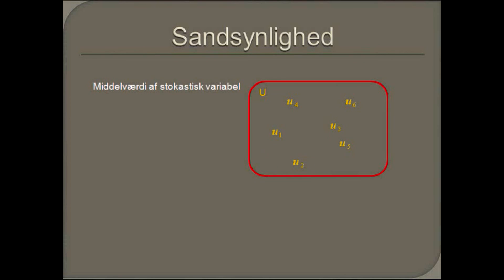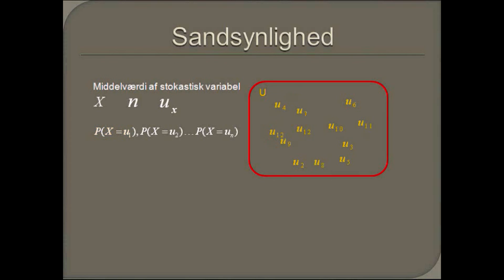Lad os nu beregne middelværdien af en stokastisk variabel X, der kan antage et antal værdier, hvor u_x er værdien af et udfald, og p er sandsynligheden for at den stokastiske variabel X er lig eksempelvis u1. Lad os antage at vi spiller med to terninger. For at beregne middelværdien — hvad vi kan forvente med størst sandsynlighed vil dukke op næste gang vi kaster de to terninger — tager vi hvert muligt udfald og ganger det med sandsynligheden for at det vil dukke op, og herefter lægger vi dem sammen. Middeltal for et kast med to terninger er altså lig 7, og faktisk er udfaldene normalt fordelte.